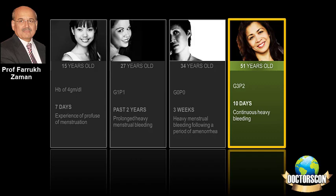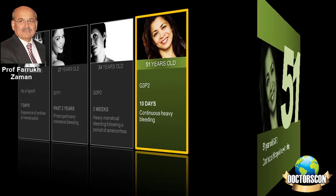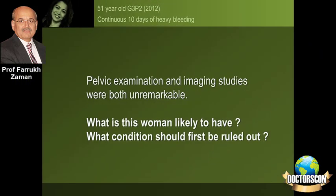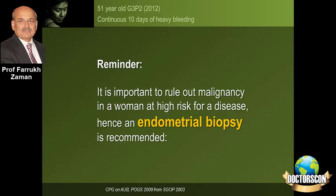Now take the example of another woman who is 51 years old, gravida 3 para 2, who has had continuous bleeding for the last 10 days. Menstrual history was not significant except that she had skipped periods in the previous year. Her BMI was 35. In medical history, she was mildly hypertensive managed on a single drug. Pelvic examination and imaging studies did not reveal anything abnormal. At the age of 51, what we need to particularly remember and rule out is malignancy of the endometrium — the incidence of which starts to increase around this age — and therefore endometrial biopsy is an important investigation.